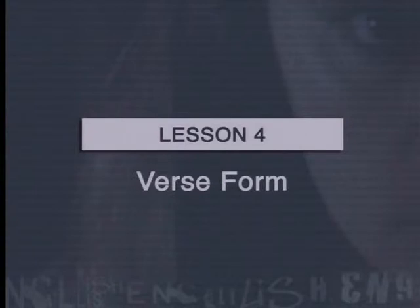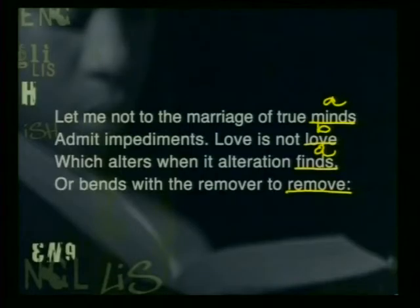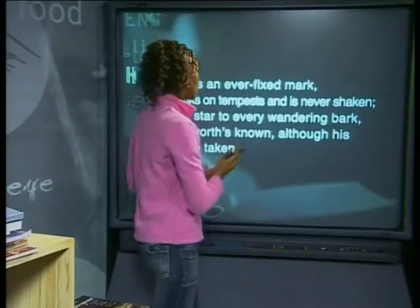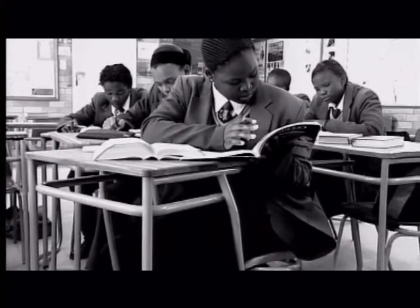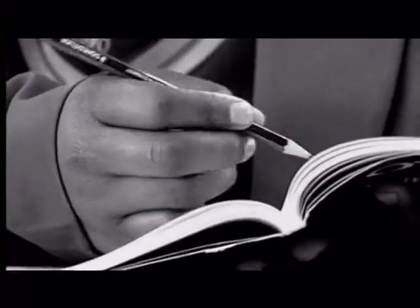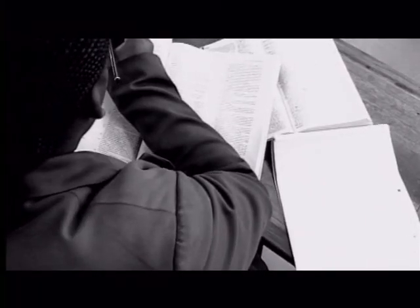Lesson 4 considers different verse forms and how these contribute to the meaning of poems. In this lesson, we don't look at modern poetry — instead, we look at a sonnet. Our reason for doing this is that sonnets have a very strict and formal structure, and different parts of the poet's argument are given in different parts of the sonnet. I would encourage you to get learners to complete the task at the end of the lesson, which involves commenting on the verse form of other sonnets. This will ensure that learners have really understood the lesson and can work out how the verse form of a sonnet works on their own.